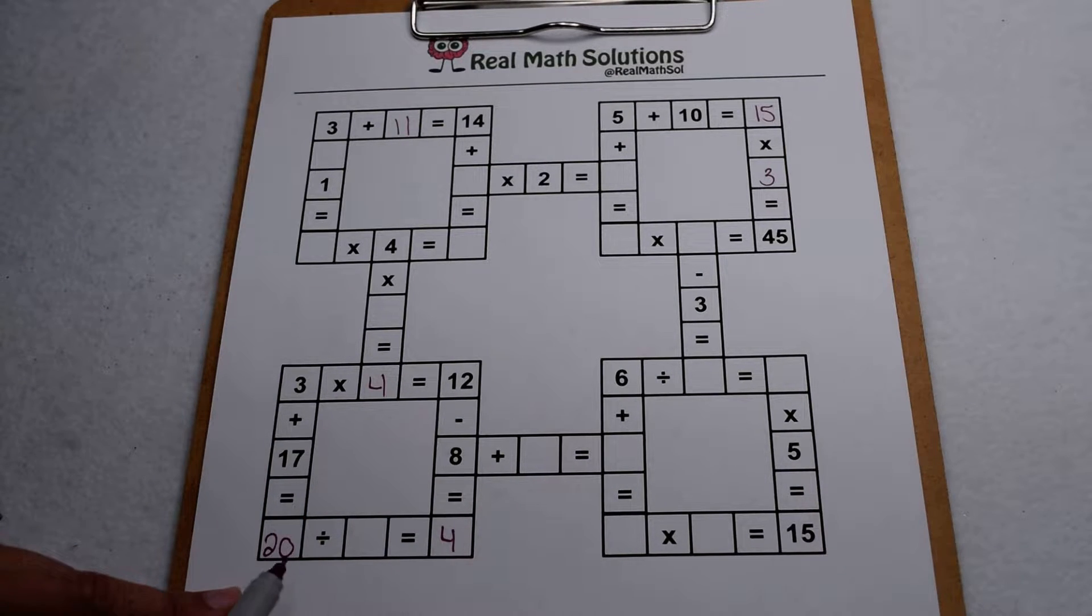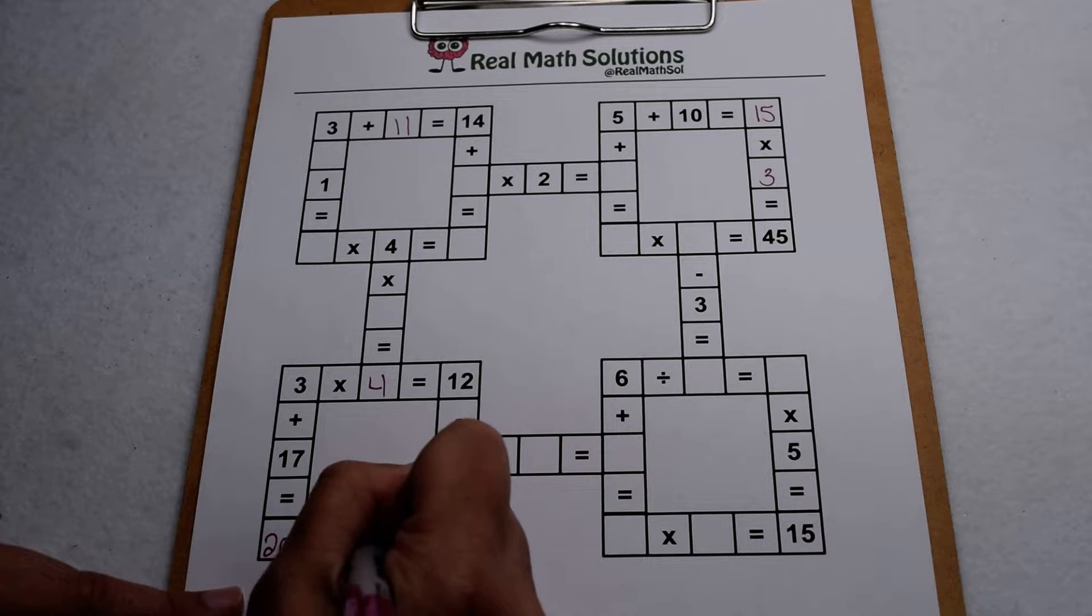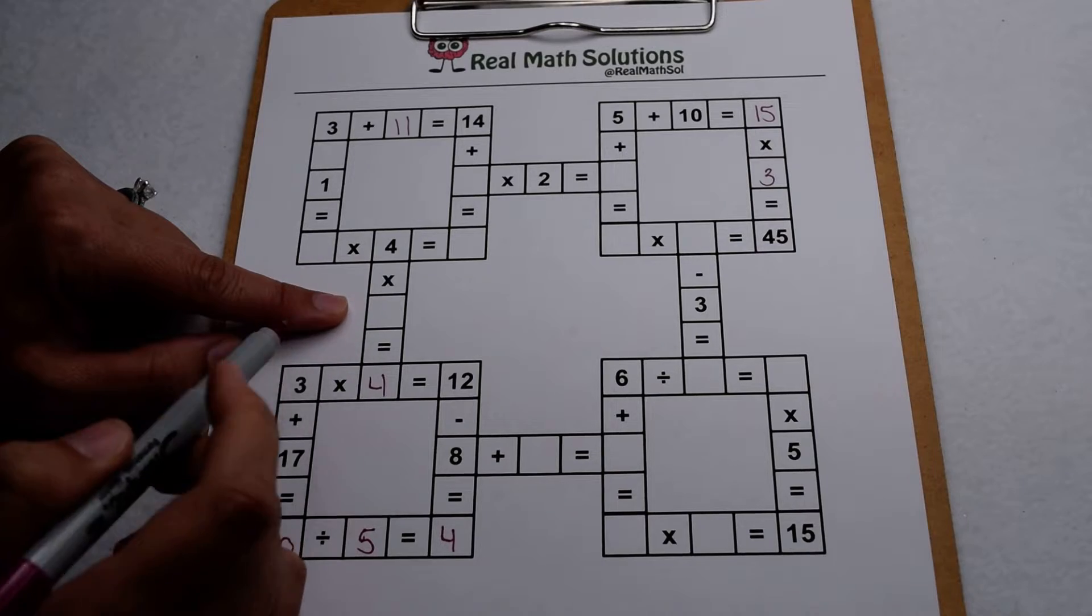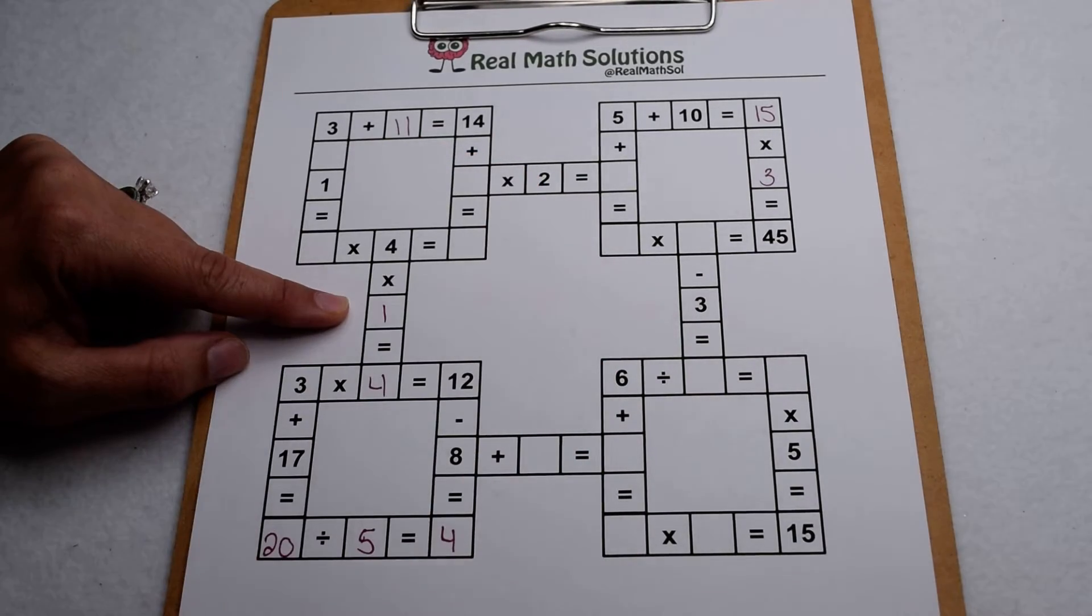Now I can fill in the bottom part of this box. 20 divided by 5 is going to give me 4 so that missing value is 5 and here I can also fill in this connector here, 4 times 1 is going to give me 4.